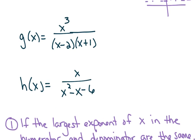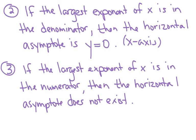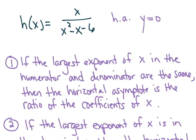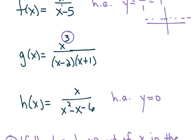Going back to h of x, since the larger exponent of x is in the denominator — numerator has 1, denominator has 2 — the horizontal asymptote is y equals 0. The last rule: if the largest exponent of x is in the numerator, then the horizontal asymptote does not exist. So for g of x, since the bigger exponent is in the numerator, this rational function does not have a horizontal asymptote — we say none, or in calculus, does not exist.